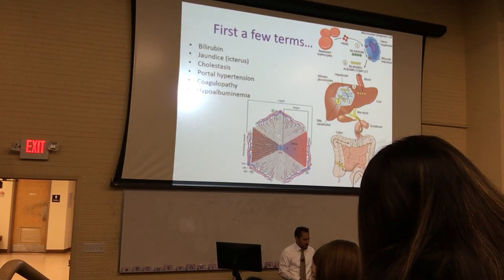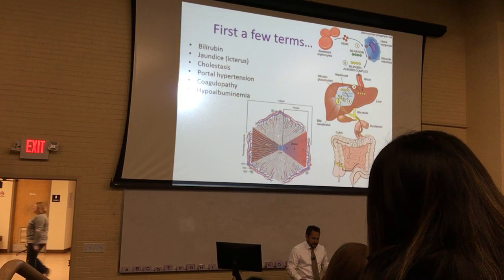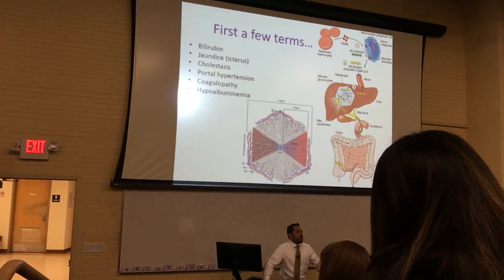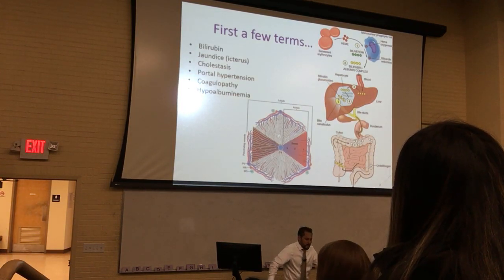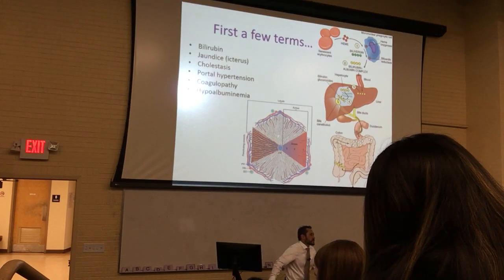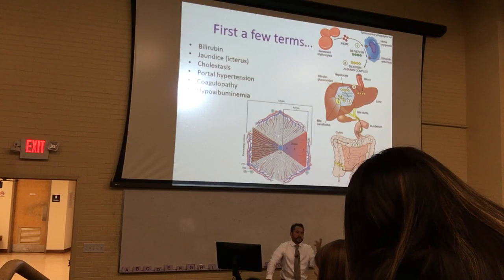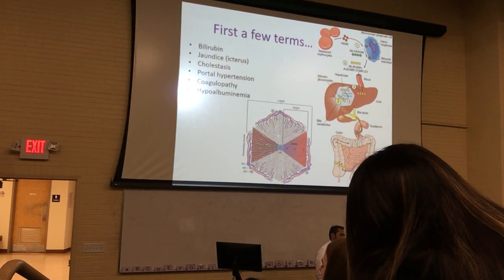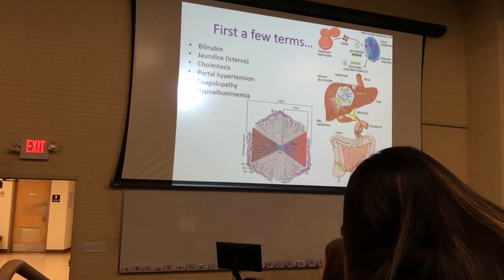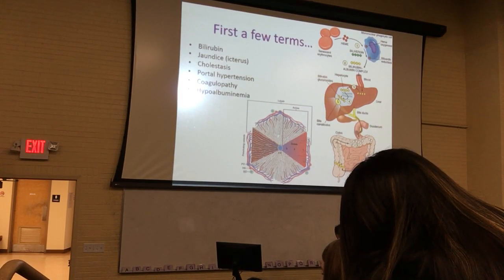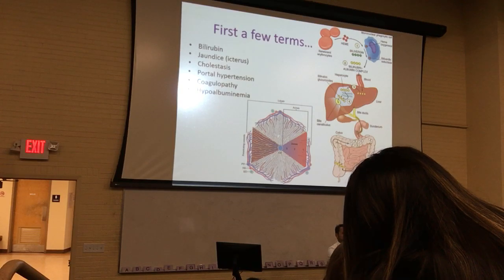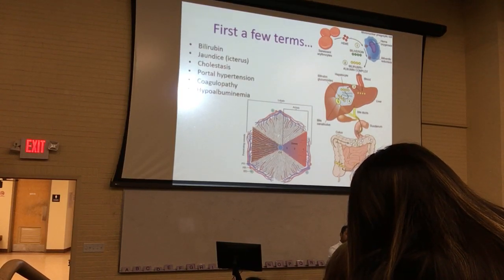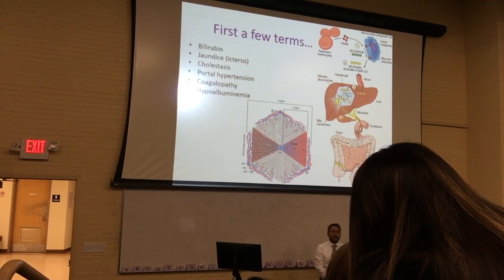Jaundice is a term referring to an overabundance of bilirubin in the system because the liver is not processing it fast enough. Usually these individuals will get yellow-colored sclera — the whites of their eyes start to go a little yellow. They might have a yellow appearance to their skin, especially if they're fair-complected. The skin will look like it has a little more yellow pigment — a sickly looking appearance.